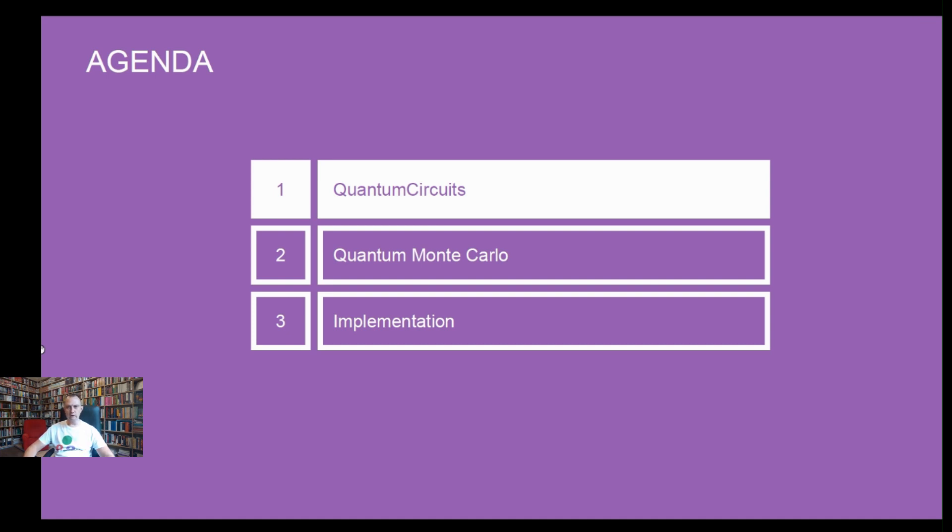I will start with a few words about the quantum circuit library. Next, I will describe the classical and the quantum Monte Carlo algorithm and where we can use them. Finally, the implementation of the algorithm will be shown.